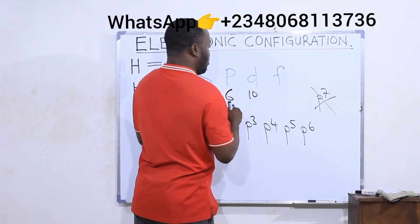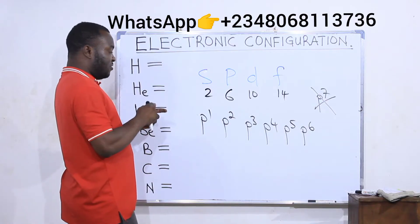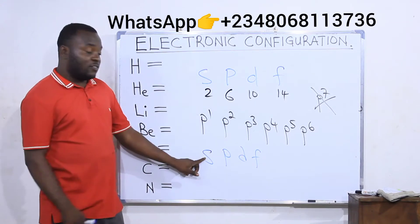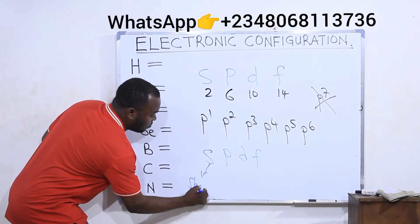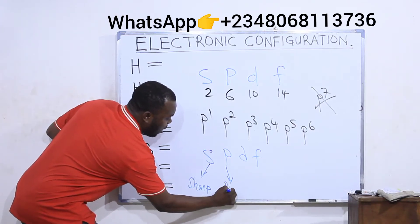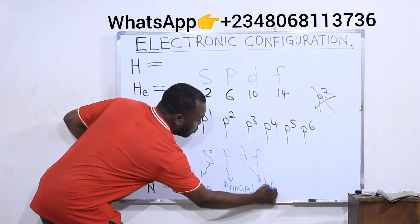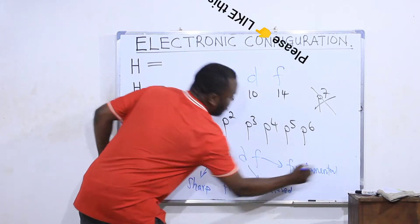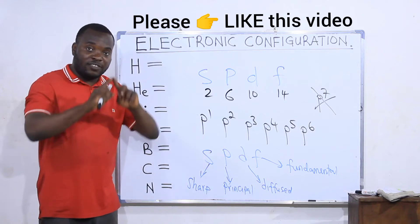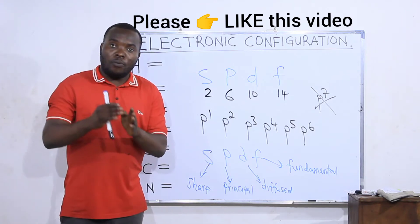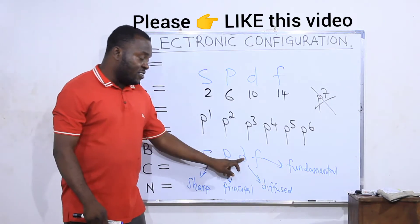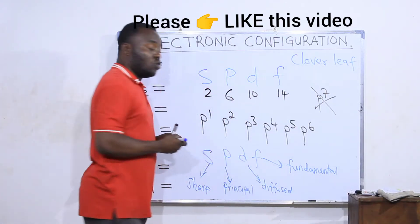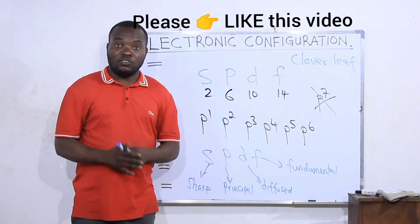To memorize the orbital names: s stands for sharp, p stands for principal, d stands for diffused, and f stands for fundamental. The shape of the s orbital is spherical; p has a dumbbell shape; d has a clover leaf shape, also called double dumbbell; and the f orbital is complex in shape.